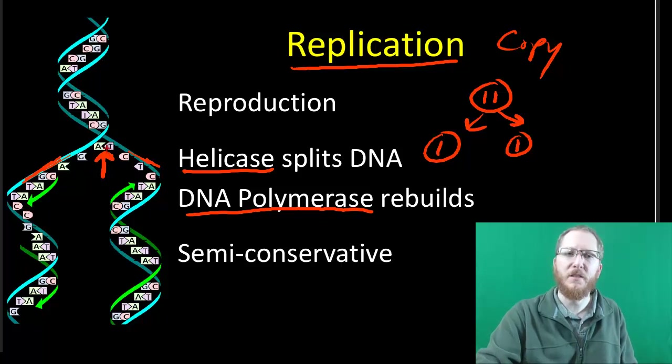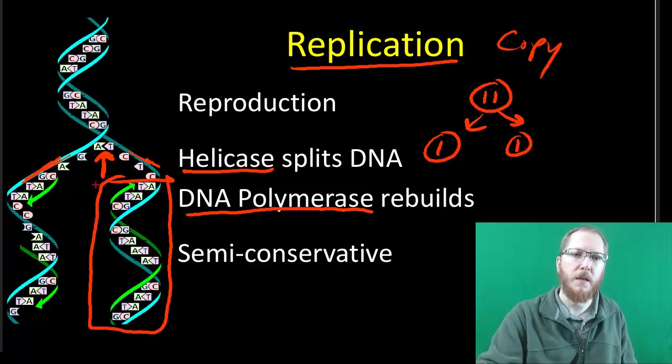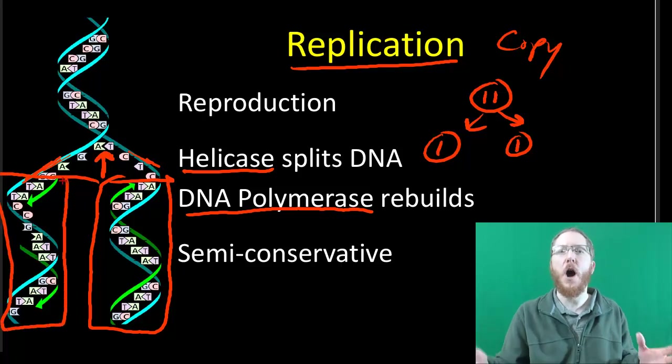So each single strand that we split will now become its own brand new double helix that's an identical copy of the next one. When this process is done and we unzip this whole thing and we fit in the new bases, we'll now have two brand new double helixes that perfectly match. And then we can give one of those to each of the offspring when we go through this process of reproduction.